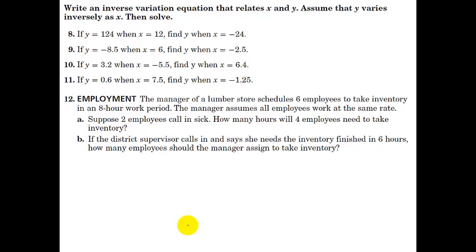Alright. Write an inverse variation equation that relates x and y. Assume y varies inversely as x, then solve. So this is a very standard problem, it's very boring. It doesn't have any context, but this is the way that the problems are usually presented to teach you the method. So, if y equals 124, when x equals 12. So, we know that we're dealing with inverse variation, so we start with y equals k over x. I'm going to do number eight using the method one. I can solve for k, and I get that k equals x times y. I can plug in y is 124, x is 12. 12 times 124. Let's grab a calculator real quick. 124 times 12, 1488.